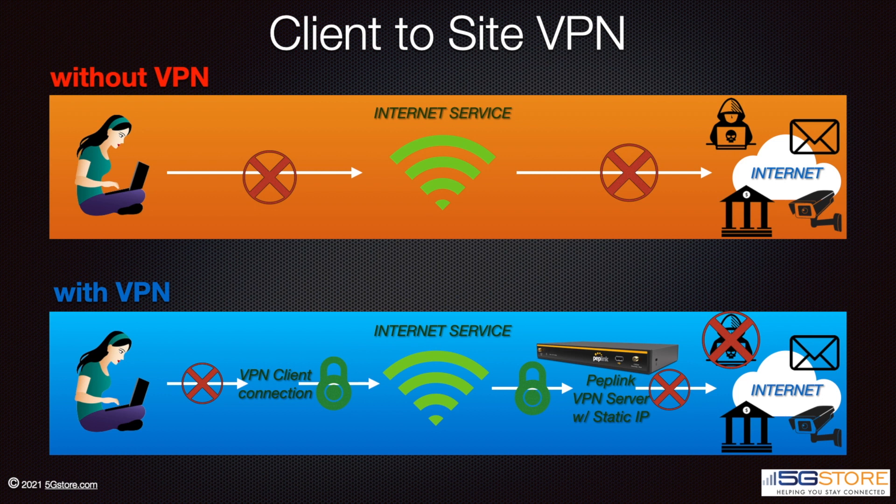Once we're connected to the VPN, any information that we send and receive through our laptop is going to be encapsulated and transmitted securely from the coffee shop Wi-Fi through the open internet and back to our PepWave at home. This protects us from any potential threats on the coffee shop Wi-Fi network, and it also lets us access local devices on our PepWave, such as security cameras or a hard drive, all as if we were connected directly to our home network.